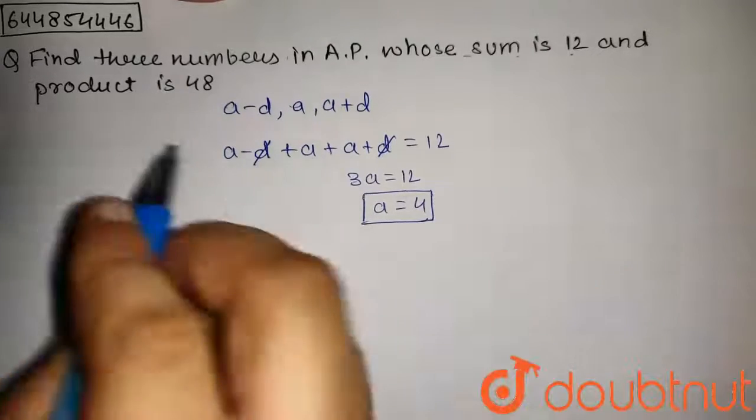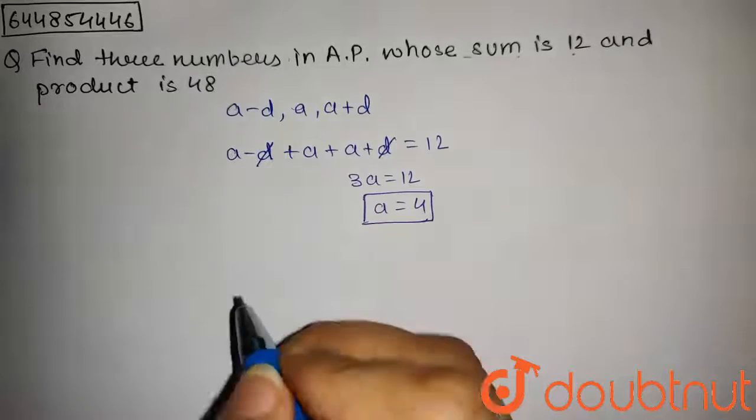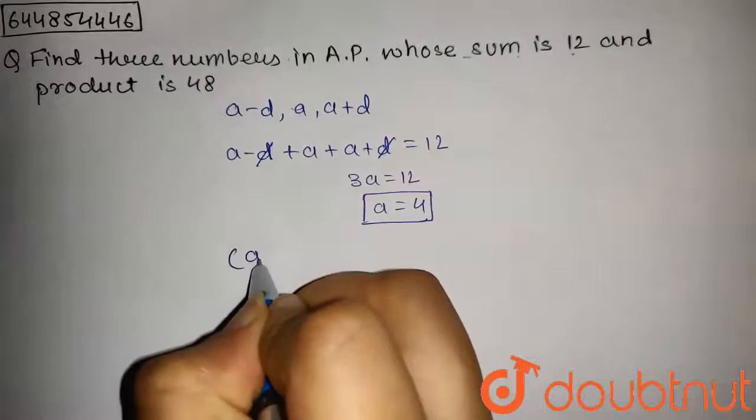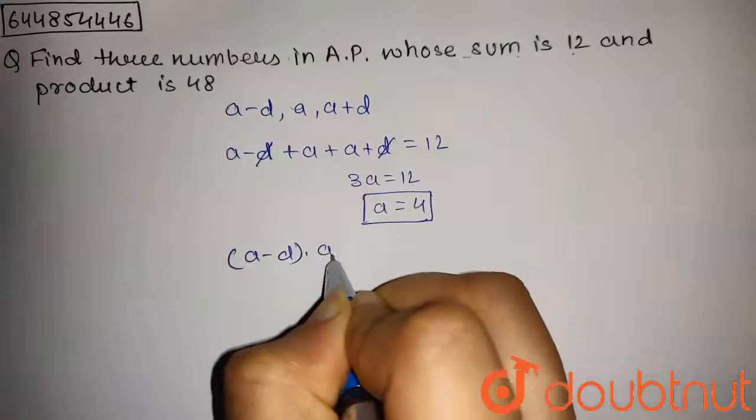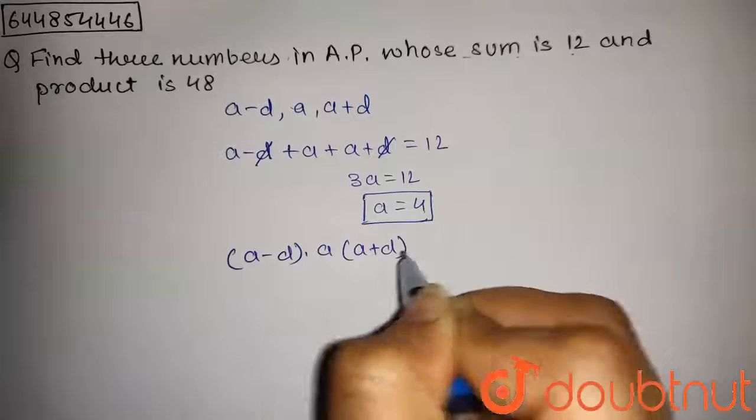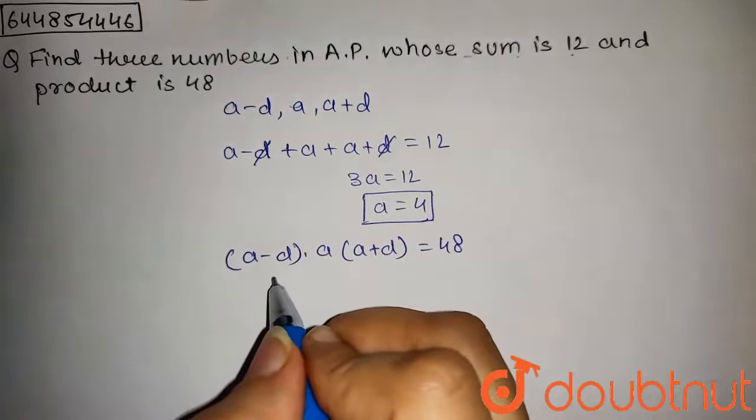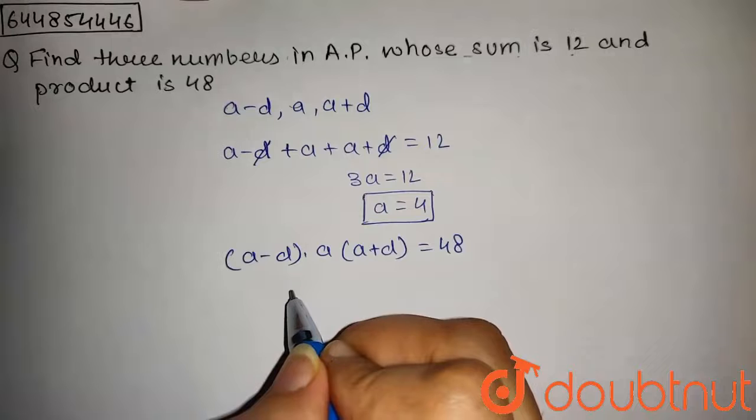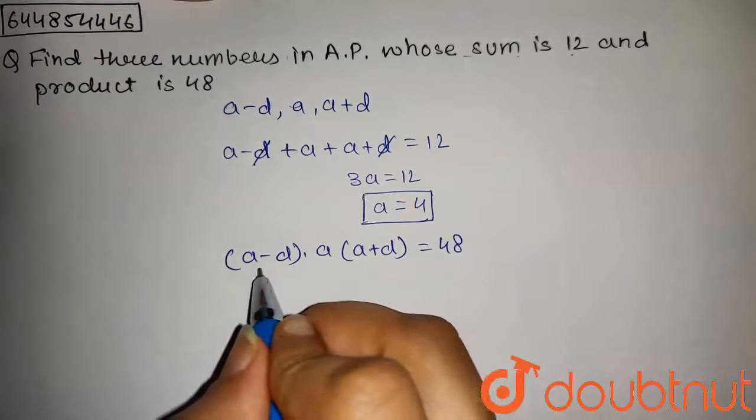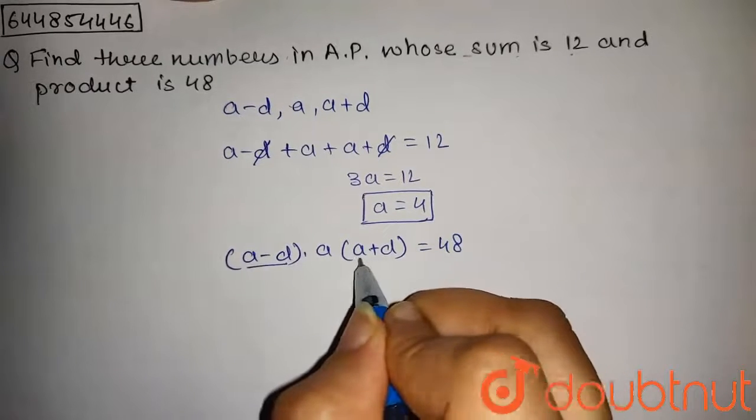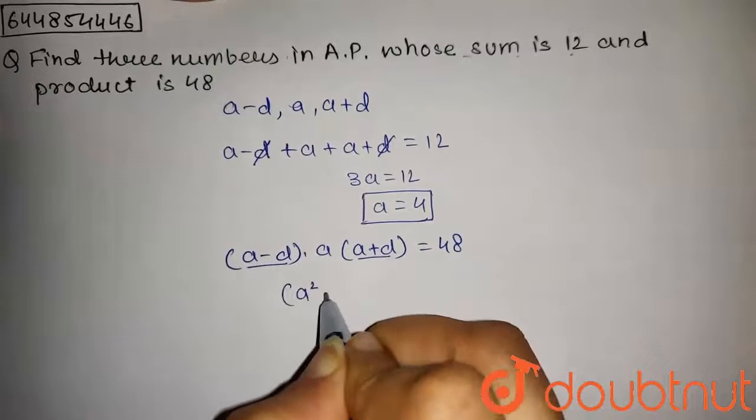Now we have also given that the product of these numbers is 48. So product will be a minus d into a into a plus d equals 48. By the formula a squared minus b squared equals a plus b times a minus b, we can write a minus d into a plus d as a squared minus d squared, into a equals 48.